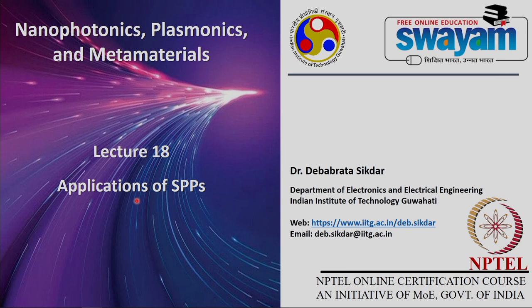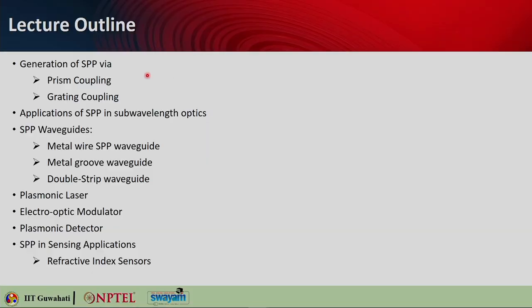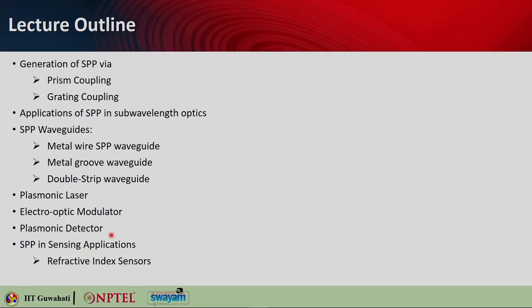Hello students. Welcome to lecture 14 of the online course on nanophotonics, plasmonics and metamaterials. Today, we will look into the applications of SPPs, that is, surface plasmon polaritons. Here is the lecture outline. We will continue where we left in the last lecture. We will start with generation of SPPs. There are two methods: prism coupling and grating coupling. Then we will look at some applications of SPPs in sub-wavelength optics, SPP waveguides like metal wire SPP waveguide, metal groove waveguide and double strip waveguide. We will also look into plasmonic laser, electro-optic modulator, plasmonic detector, and application of SPP in sensing applications such as refractive index sensors.